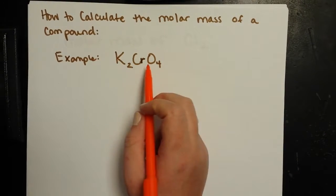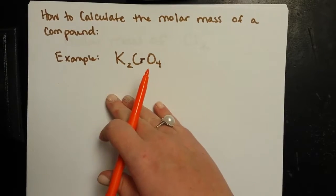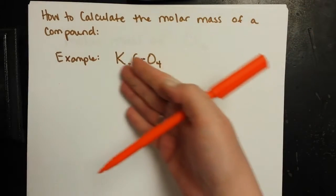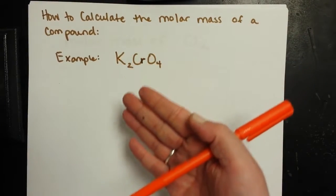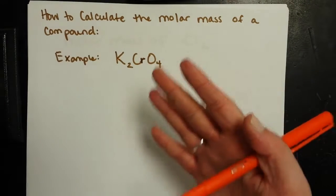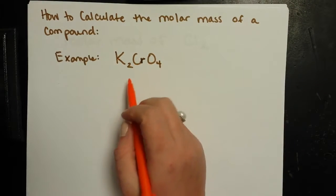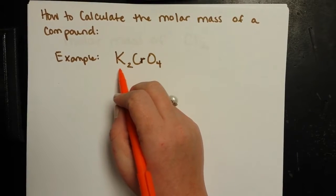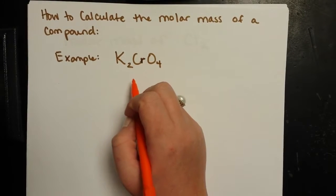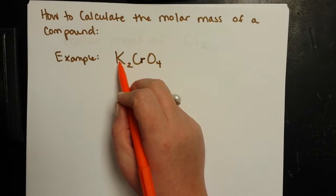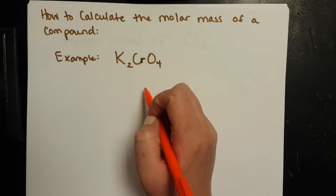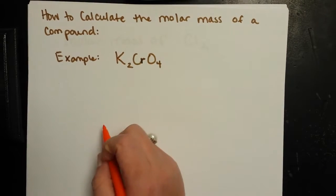Whether we're looking at atoms to a formula unit or molecule, or if we're looking at moles of elements to moles of their compound, that ratio holds. Which means that if I want to find the mass of the compound, it should be equal to the sum of the masses of everything inside in the same ratio that they are represented in.